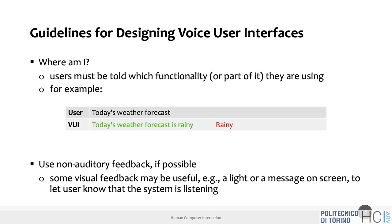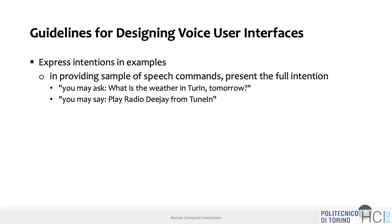Visual feedback can be a light, a message on screen, to let users know the system is listening, working, and everything is fine — or not. For instance, if the Echo has no internet connection and you ask for the weather, the ring turns red and it also says it cannot connect. When suggesting new speech commands, provide full examples: 'you might ask: what is the weather in Turin tomorrow?' — not just 'what's the weather.'